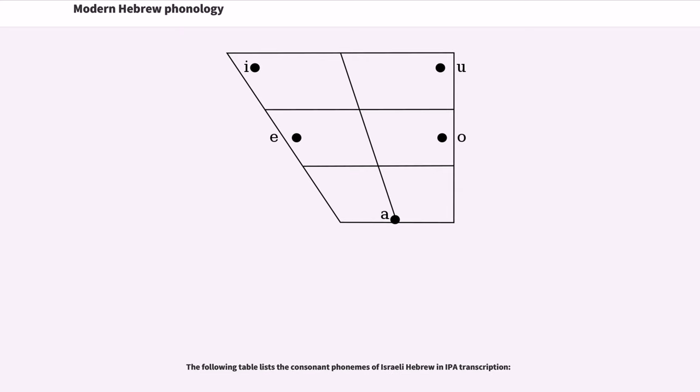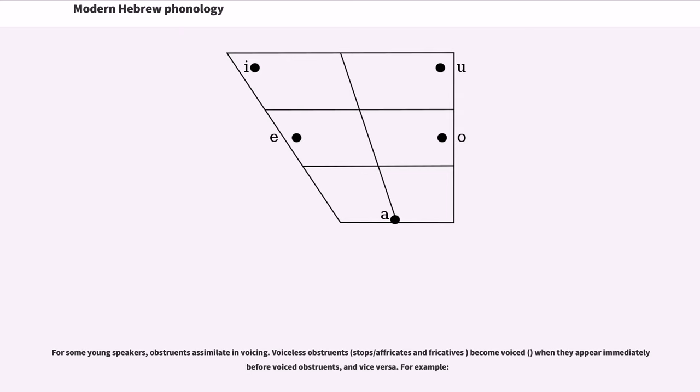The following table lists the consonant phonemes of Israeli Hebrew in IPA transcription. For some young speakers, obstruents assimilate in voicing. Voiceless obstruents (stops/affricates and fricatives) become voiced when they appear immediately before voiced obstruents, and vice versa.